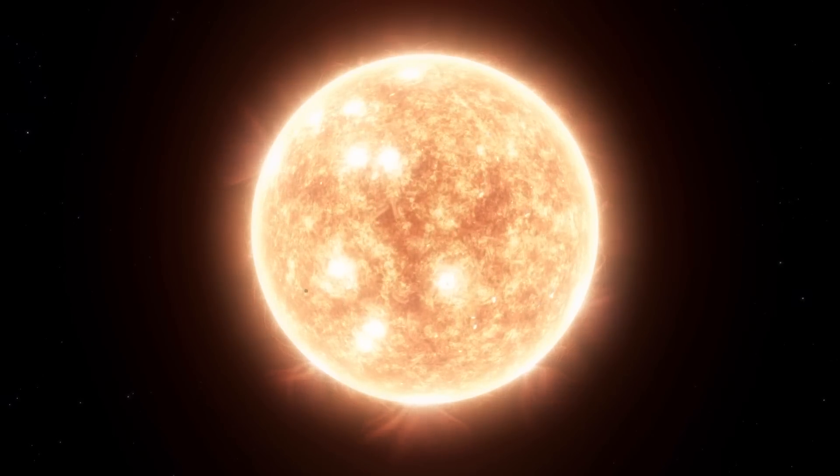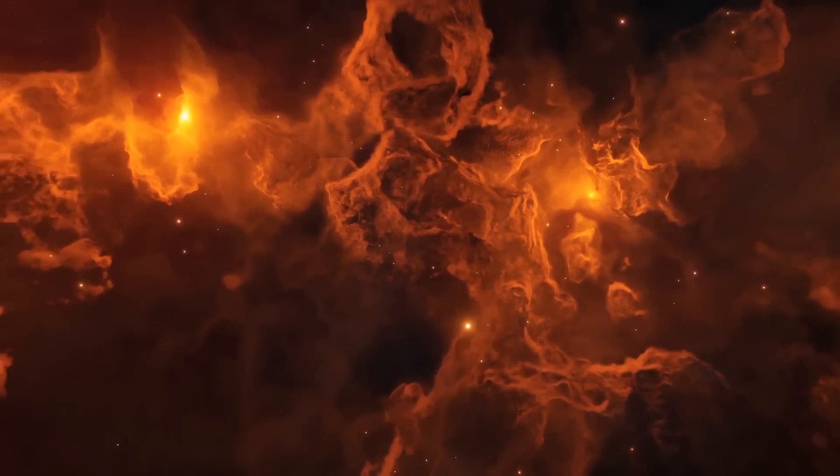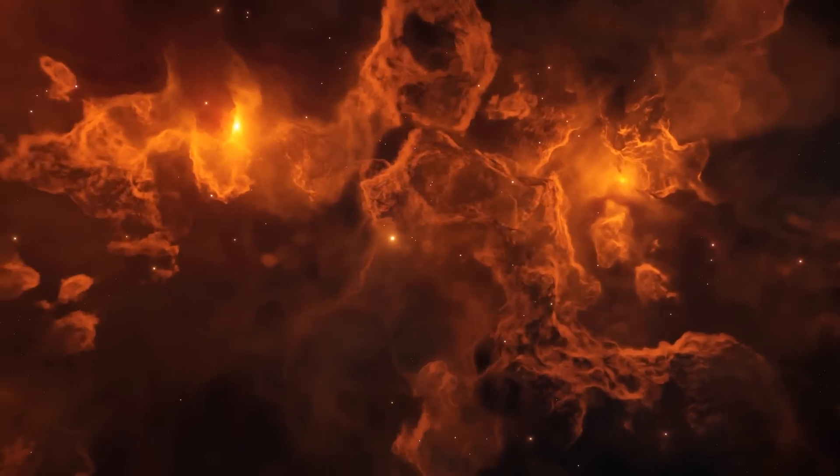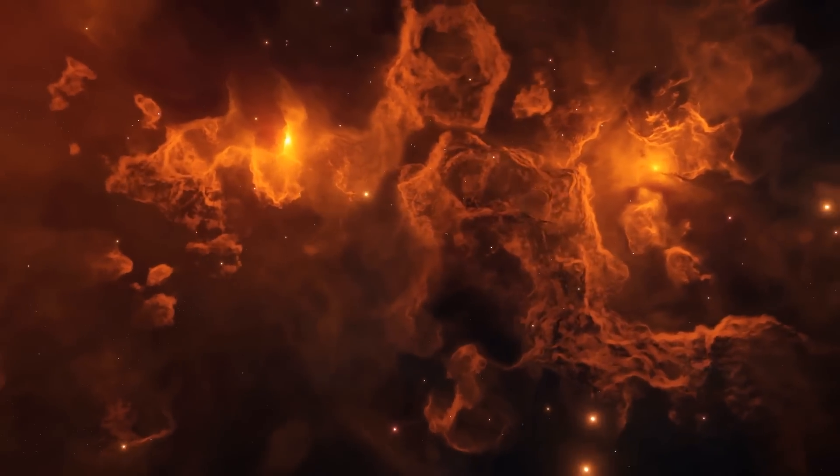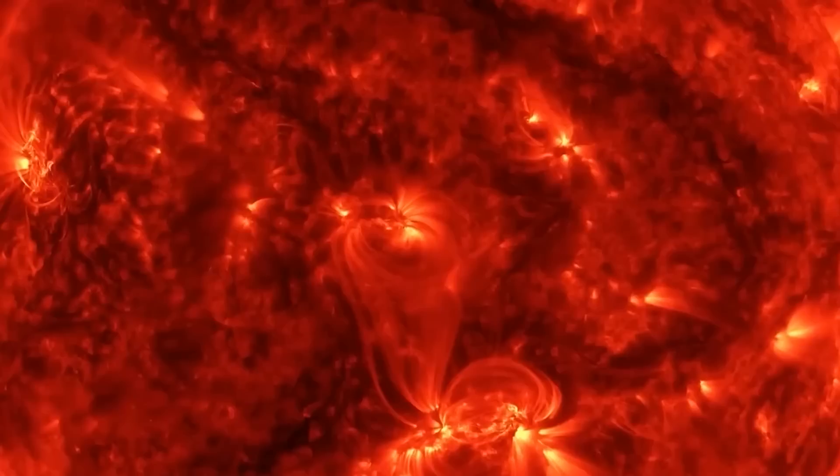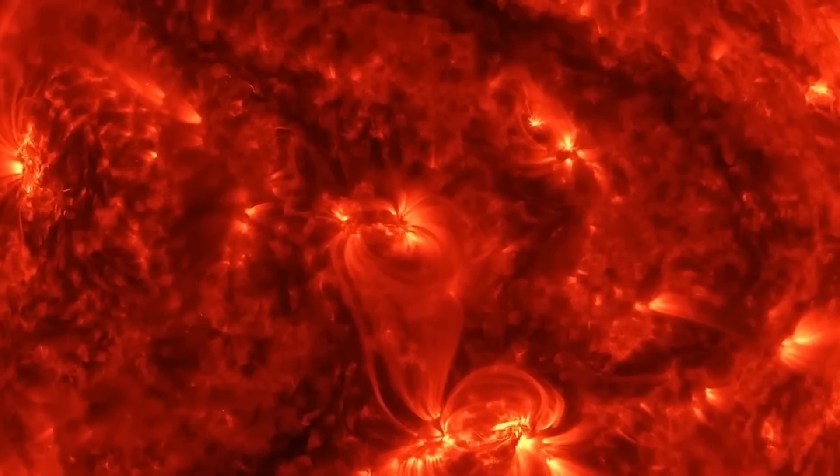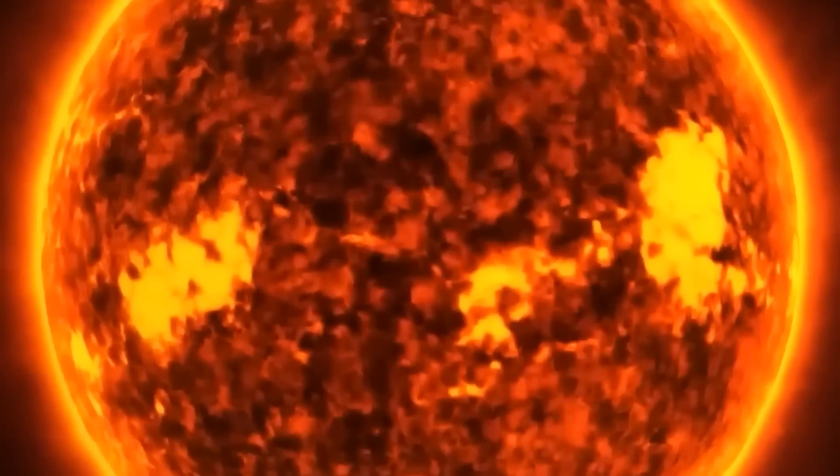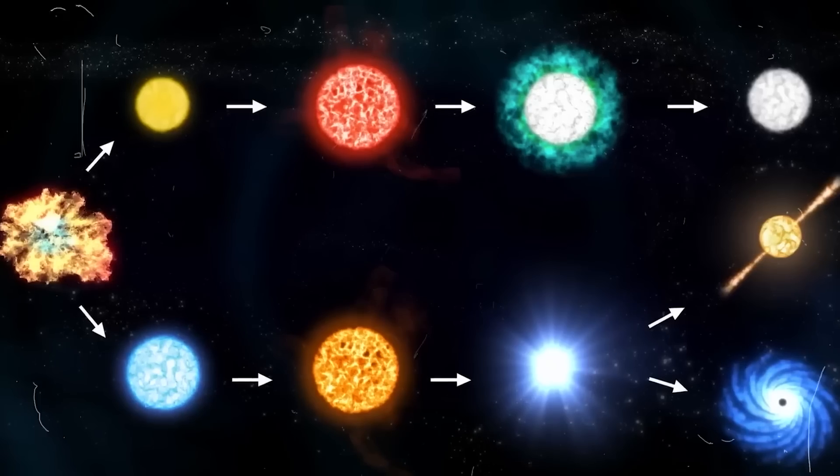As stars like Betelgeuse deplete their hydrogen fuel, they transition to the red supergiant phase, expanding in size and changing color. The future of Betelgeuse, like that of all red supergiants, leads to an explosive conclusion as a supernova. This event will represent the pinnacle of its life cycle, leaving behind either a neutron star or a black hole.